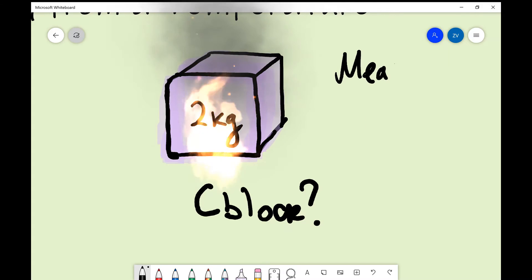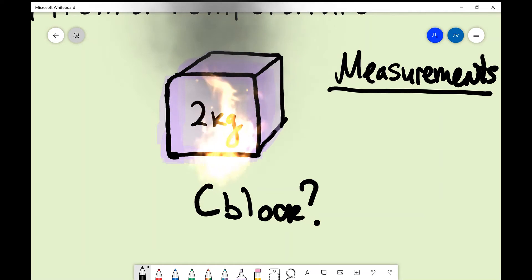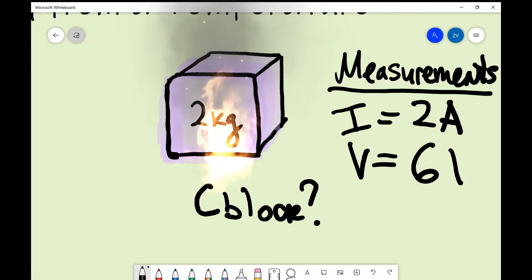So let's say that our measurements are as follows. Our current during the heating period, let's keep things simple, was 2 amps and our voltage was 6 volts.